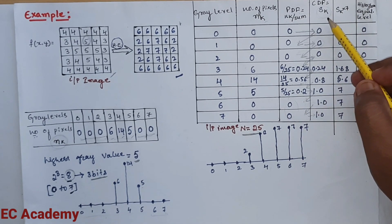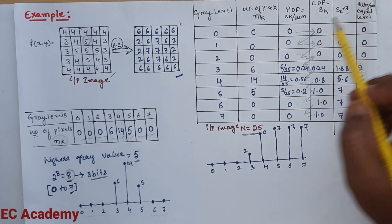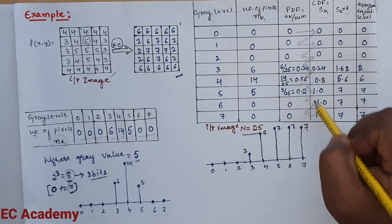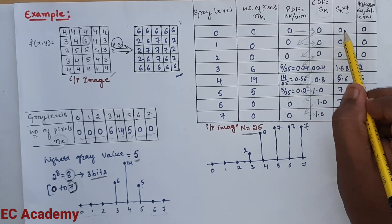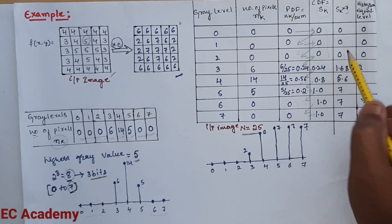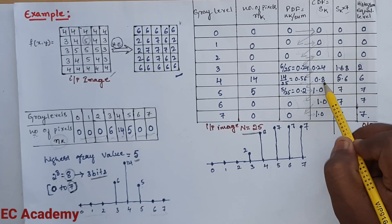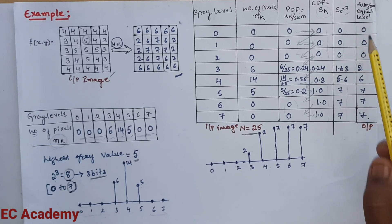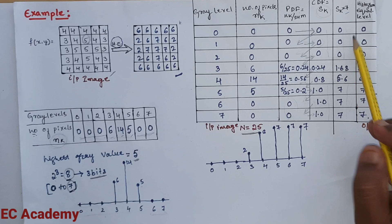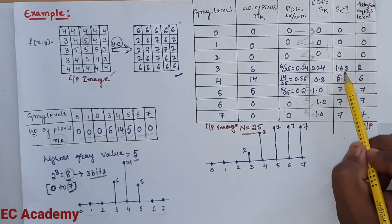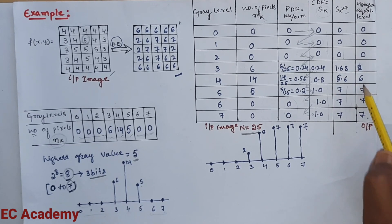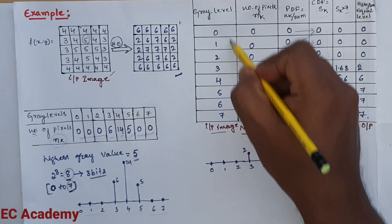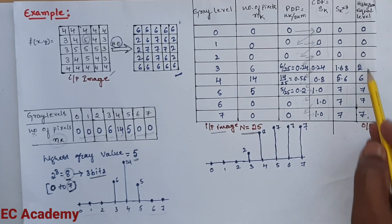We multiply the CDF (SK) by the maximum gray level value, which is 7 for 3-bit representation. The results are: 0×7=0, 0.24×7=1.68, 0.8×7=5.6, 1×7=7. In the next step, we write the histogram equalization levels by rounding these values: 0 stays 0, 1.68 rounds to 2, 5.6 rounds to 6, and 7 stays 7. The first column is the input pixel value and the last column is the output pixel value.